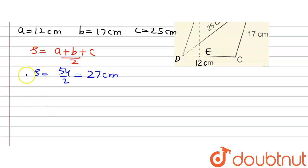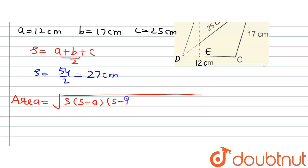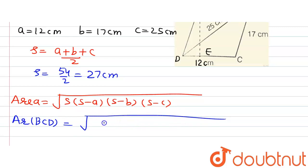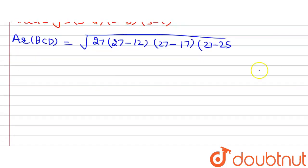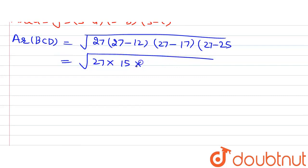Heron's formula states that area = √(S × (S − a) × (S − b) × (S − c)). Substituting the values, area of BCD = √(27 × (27 − 12) × (27 − 17) × (27 − 25)) = √(27 × 15 × 10 × 2).